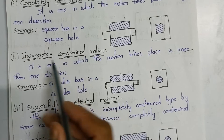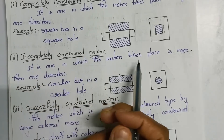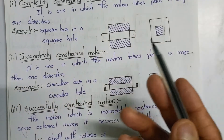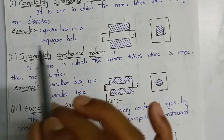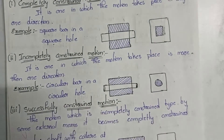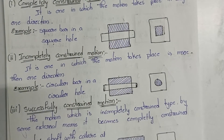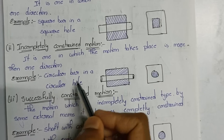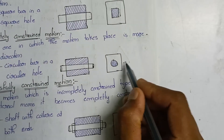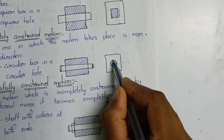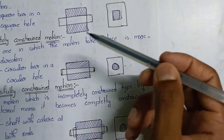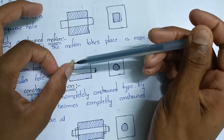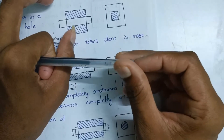Incompletely constrained motion is one in which motion takes place in more than one direction. The example is a circular bar inside a circular hole. When a circular shaft is placed inside a circular hole, it can both slide and rotate — more than one motion is possible. This is incompletely constrained motion.